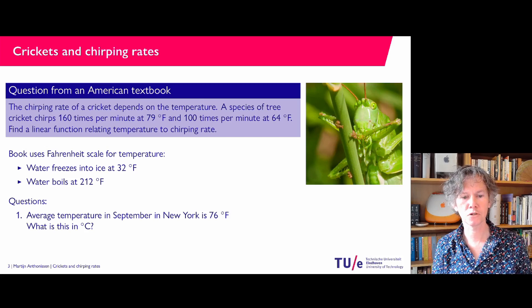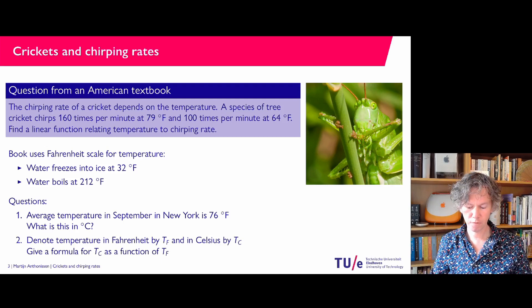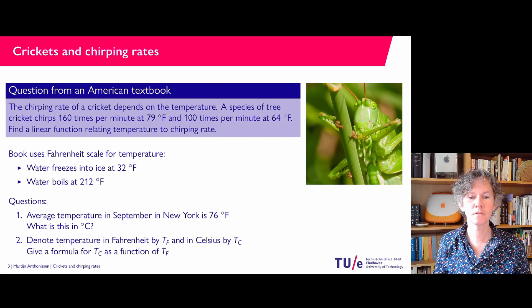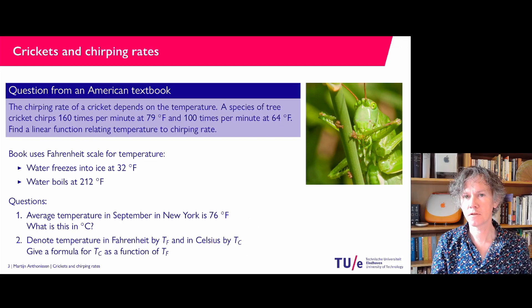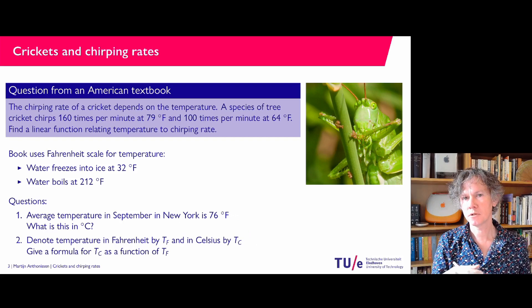So we could ask the related problems. The average temperature in New York in September is 76 degrees Fahrenheit — what is that in Celsius? Or more generally, if we denote the temperature in Fahrenheit by Tf (where f stands for Fahrenheit) and in Celsius by Tc (where c stands for Celsius), can you give a general formula relating Tc to Tf? It is given that this relation is linear. I think both of these questions, if you spend a little bit of time on them, you would be able to solve.